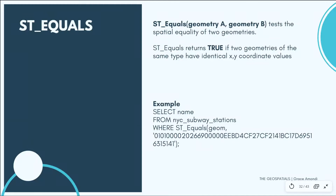First, we're going to look at ST_Equals, and it mainly tests the equality of two geometries. These geometries must be of the same type, and they must have an identical X, Y coordinate value so that the output is returned as true. Most of these spatial functions we'll be testing will either return true or false — meaning they'll be boolean functions.